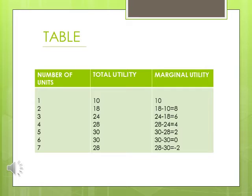When the seventh unit is consumed, total utility begins to fall. Negative marginal utility is sometimes called marginal disutility.